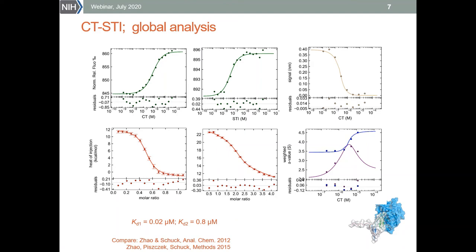On this plot we see two MST titrations shown in green, two ITC titrations in red, sedimentation velocity data obtained by AUC in the lower right corner, and in the upper right corner data obtained by biolayer interferometry. This particular BLI experiment was done in competition mode to avoid any possible effects of protein immobilization.